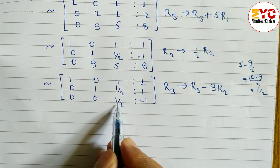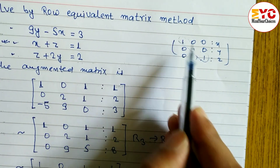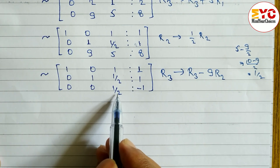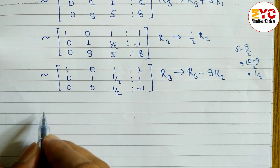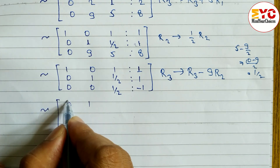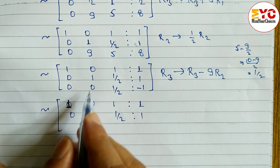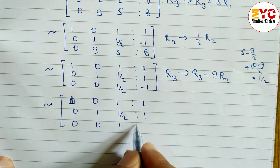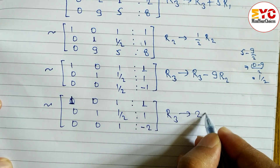Now we convert the leading entry of row 3 into 1. The main diagonal must be 1 and all other entries 0. We apply R3 → 2R3. Row 1: 1, 0, 1, 1. Row 2: 0, 1, 1/2, 1. New row 3: 2×0 = 0, 2×0 = 0, 2×(1/2) = 1, and 2×(-1) = -2. So row 3 is: 0, 0, 1, -2.